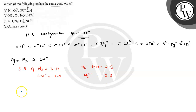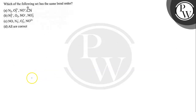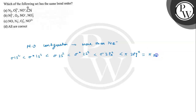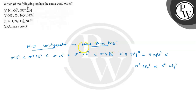Now we will write the molecular orbital configuration for more than 14 electrons. The configuration for more than 14 electrons is: σ1s² < σ*1s² < σ2s² < σ*2s² < σ2px² < π2py² = π2pz² < π*2py² = π*2pz².